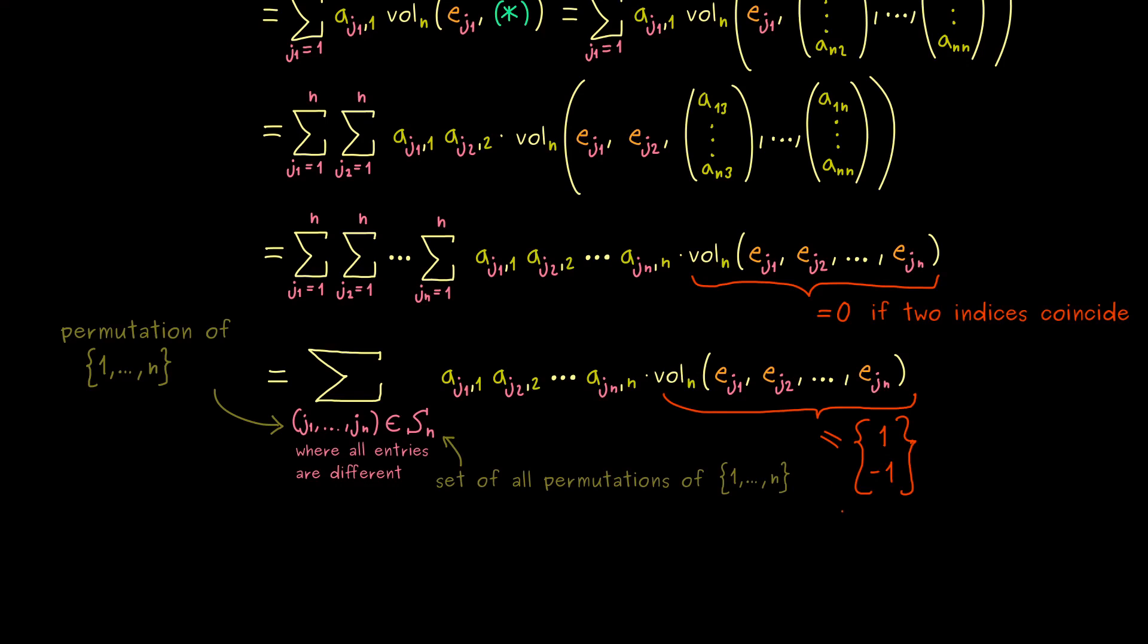In other words, we just know everything if we just count the number of exchanges we need. More precisely, we get plus 1 if we need an even number of exchanges to get to the ordinary order. So each exchange would get us a minus sign, but if we had an even number of exchanges it would not matter.